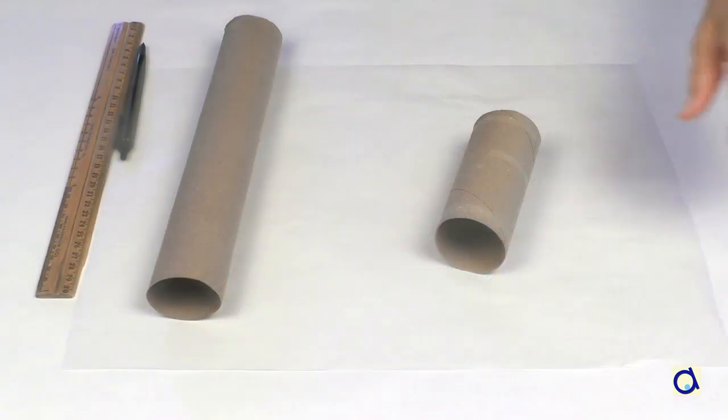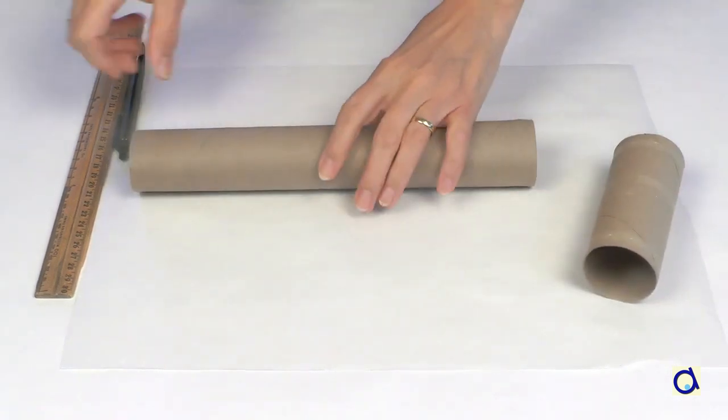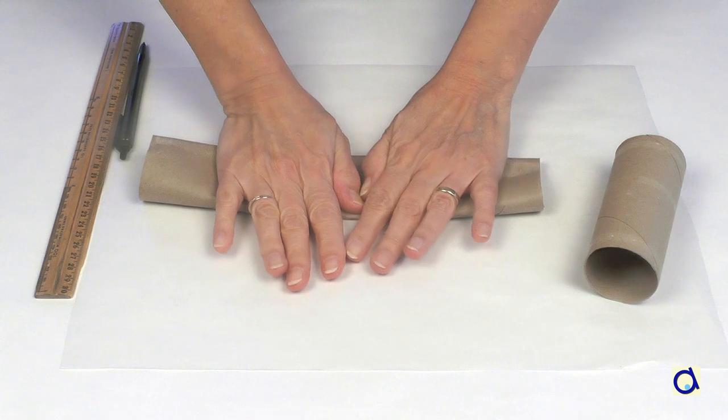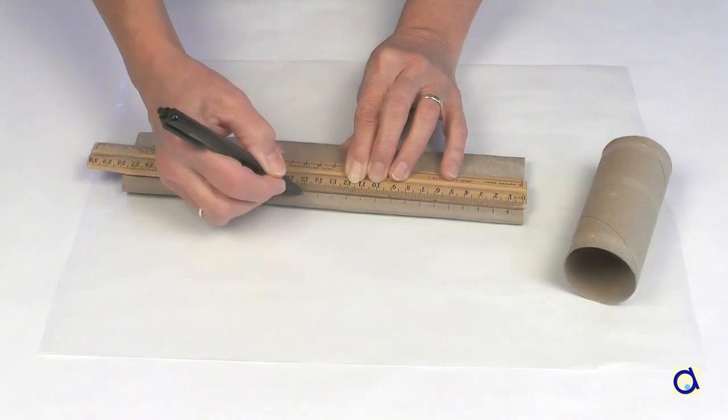Take a cardboard tube from a roll, either paper towels or toilet paper. Flatten the tube. Mark the tube every centimeter or half inch.